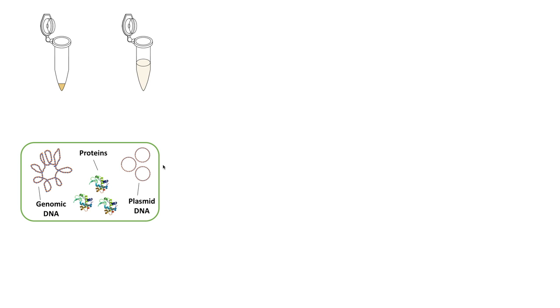We'll start our experiment with an overnight culture of bacteria, which we'll centrifuge to form a bacterial cell pellet. We'll remove the culture media, and then we're going to re-suspend the bacterial cell pellet by repeatedly pipetting up and down. We want to make sure that we completely re-suspend the pellet. Otherwise, we'll have inefficient lysis and a drastic reduction in the amount of plasmid DNA recovered.